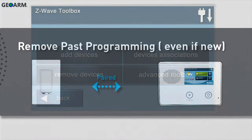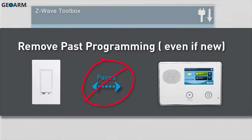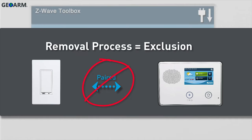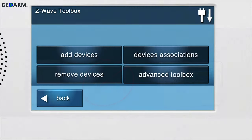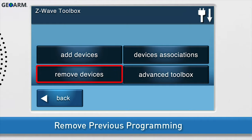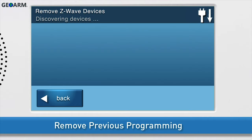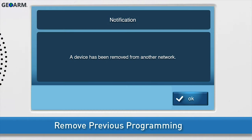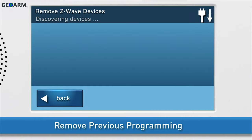Z-Wave devices may need to have past programming removed before they can be added to a panel, even if they are new. We do this by performing the removal process, which is also known as exclusion. To begin, select the Remove Devices button. The Remove Z-Wave Devices screen will appear. Press either the bottom or the top of the paddle two times. You will see a notification on screen that the device was removed. Press OK, then press Back.